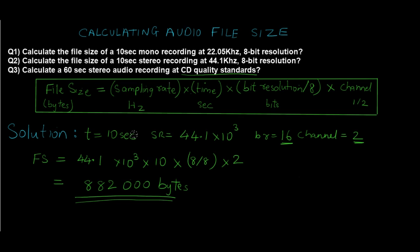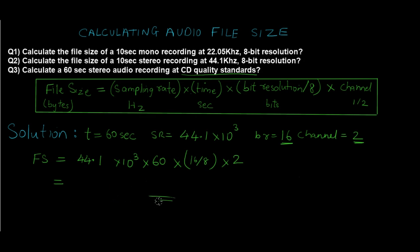The time here is 60 seconds. Substituting all values: FS = 44.1 × 10³ × 60 × 16 ÷ 8 × 2. The sampling rate is converted to hertz, bit resolution is 16 divided by 8, and channel is 2. Calculating these values, the file size comes out to 10,584,000 bytes — that is the final answer for question 3.